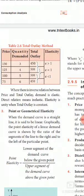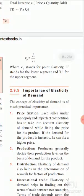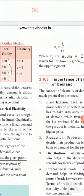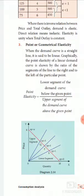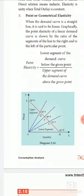The demand curve is divided into two parts: the lower segment and the upper segment. Using this method, we can calculate elasticity and explain whether demand is relatively elastic, relatively inelastic, unitary, perfectly elastic, or perfectly inelastic. In this point or geometrical method, one diagram is given in your book — see diagram 2.14.